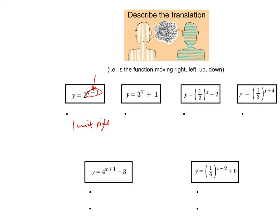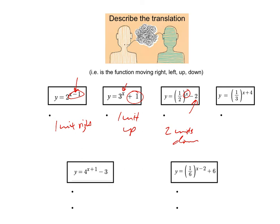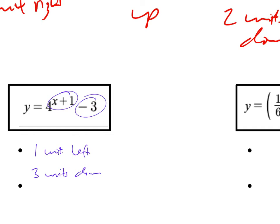If we didn't do anything to x, there's no left or right movement, but adding 1 outside would move us 1 unit up. Similarly, if x is unaffected we won't go left or right, but a minus 2 outside means 2 units down. If we added 4 directly to x in the exponent, that moves 4 units left. Adding 1 directly to x moves 1 unit left, and subtracting 3 outside would be 3 units down. Subtracting 2 from x moves 2 units to the right, and a plus 6 outside would be 6 units up.